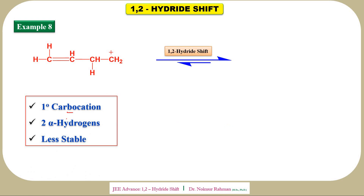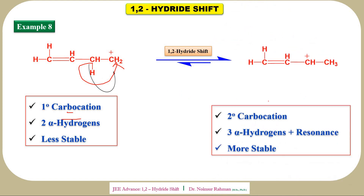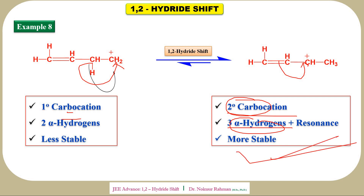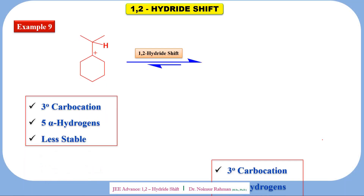Example eight: this is a primary carbocation with two alpha hydrogens — it is less stable. After hydride shift is carried out, we get a secondary carbocation with three alpha hydrogens. There is also resonance present in this new carbocation. Because of both resonance and more alpha hydrogens, the secondary carbocation is more stable.